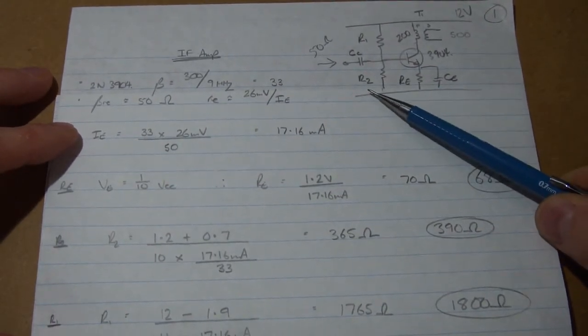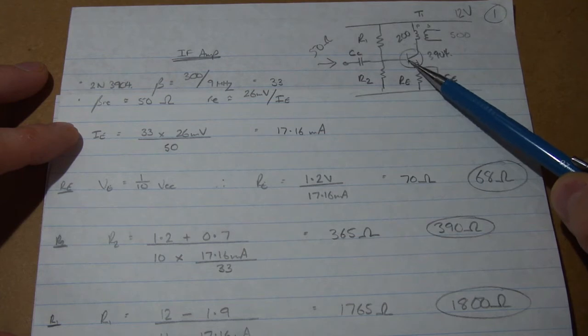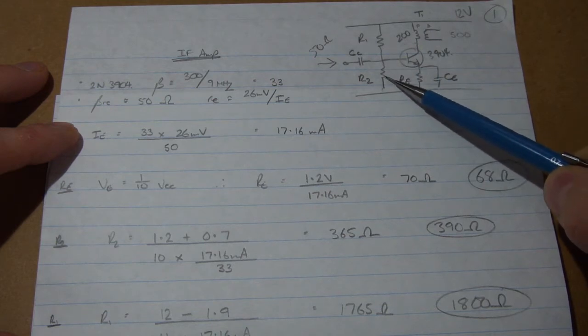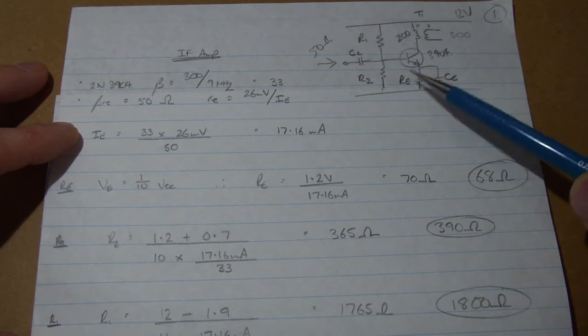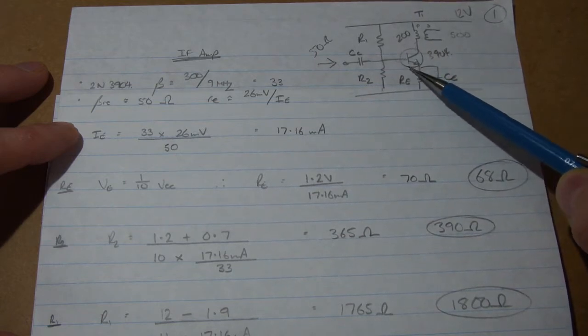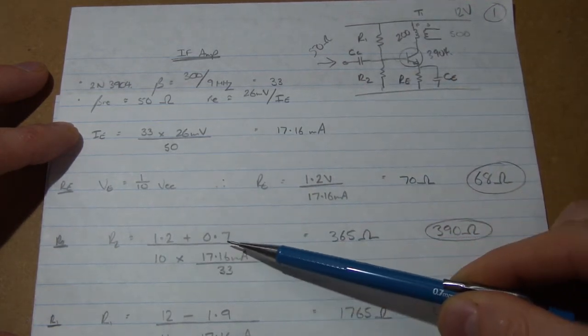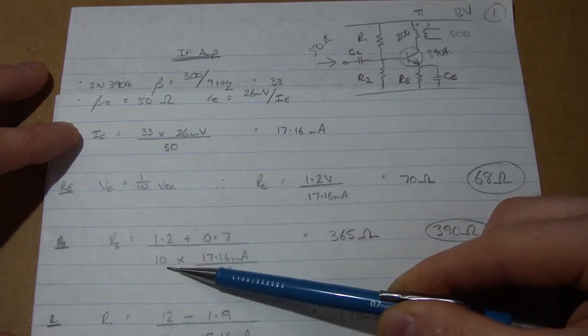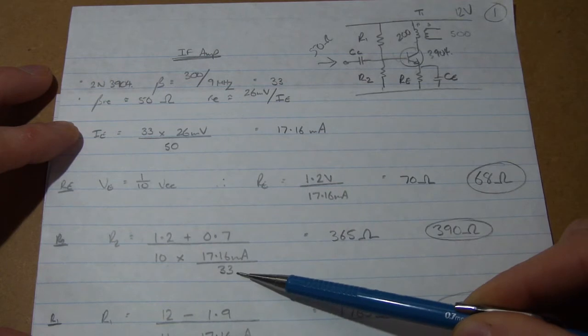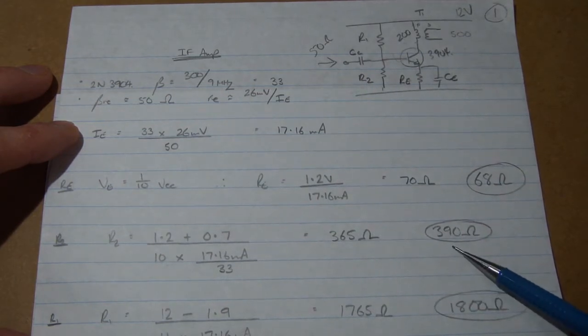Then looking for R2. So R2 will have that emitter voltage of 1.2 plus 0.7 for the forward biased junction here, gives us 1.9 divided by 10 times base current. Now we're going to do a rule of thumb that our emitter current is approximately equal to the collector current. The only difference is a small amount of microamps, which is our base current. So if we solve, we can say here our 1.2 plus 0.7, which gives us the voltage there, divided by 10 times IE divided by 33, which is our beta, which gives us our base current. So 10 times that gives us 365 ohms, so we'll use the standard value of 390 ohms.